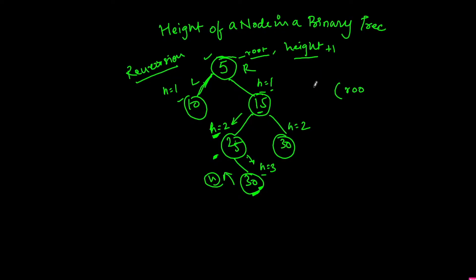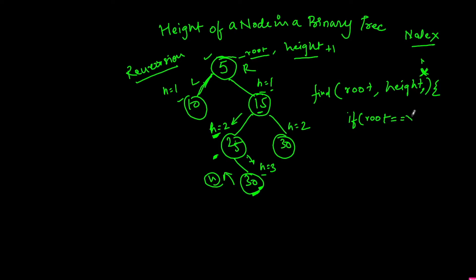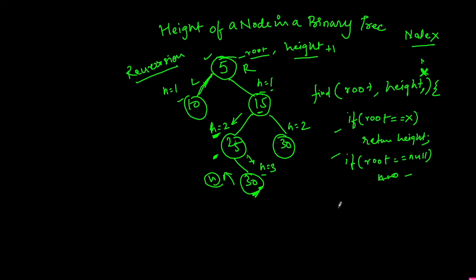In a recursive call, this recursive function will pass the root and the height. We also have a node x — we are finding node x, the height of node x. When root equals x, return height. If root equals null, that means we hit the leaf node, so we don't return anything meaningful there. If neither condition is met, make a recursive call to root.left with height + 1 and x.